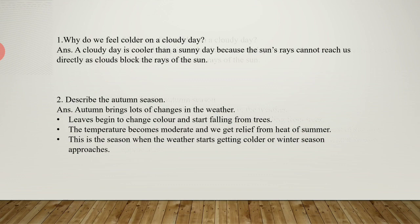Question 2. Describe autumn season. Autumn brings lots of changes in the weather. Leaves begin to change color and start falling from trees. The temperature becomes moderate and we get relief from the heat of summer. This is the season when the weather starts getting colder, or the winter season approaches.